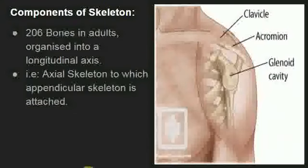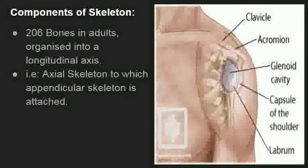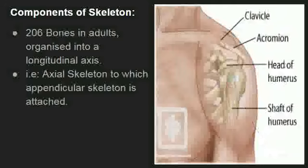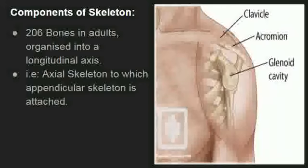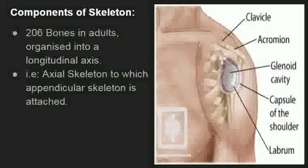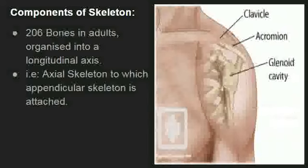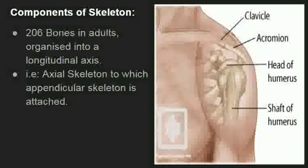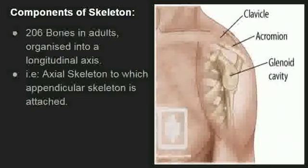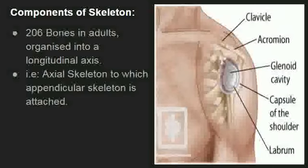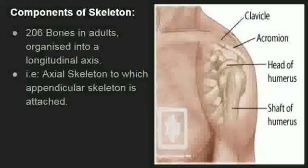Components of skeleton: Human skeleton mein 206 bones in adults mojood hoti hain, jo longitudinal axis mein organized hain. Human skeletal system mein axial skeleton ke saath appendicular skeleton attached hoti hain.